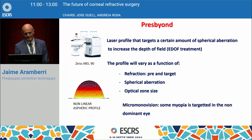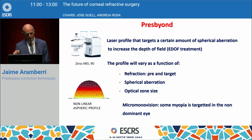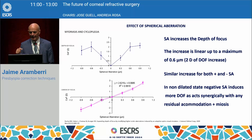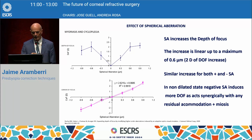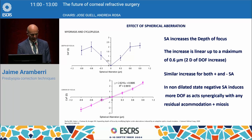The last platform is PresbyOn. The laser profile here targets a certain amount of spherical aberration — so it's a slightly different approach. We are not necessarily increasing central power, but targeting a certain amount of spherical aberration to increase the depth of field. The profile will vary as a function of refraction, spherical aberration, and optical zone. We are again targeting micro-monovision, with some myopia targeted in the non-dominant eye. Spherical aberration increases the depth of focus, and this occurs at both sides of zero — it's quite the same for negative and positive.